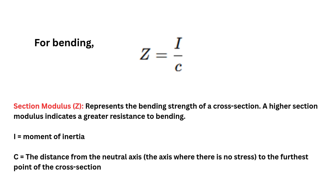Generally for bending, we mostly use the formula Z equals I divided by C, where Z is the section modulus. It represents the bending strength of the cross section — higher section modulus indicates greater resistance to bending. Here, I is the moment of inertia and C is the distance from the neutral axis, which is the axis where there is no stress, to the farthest point of the cross section.